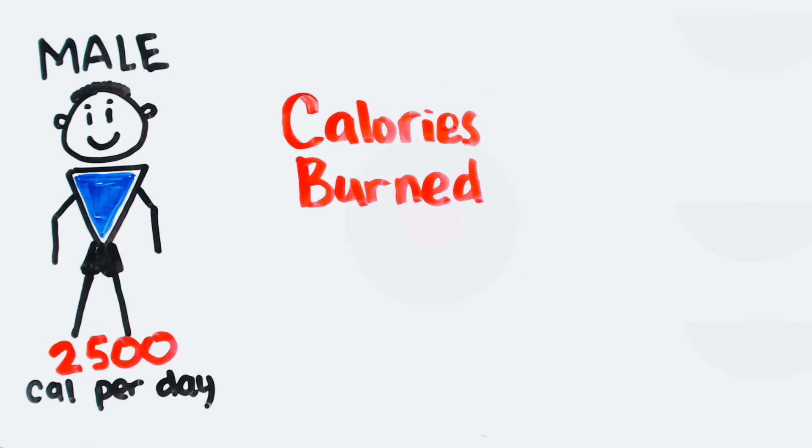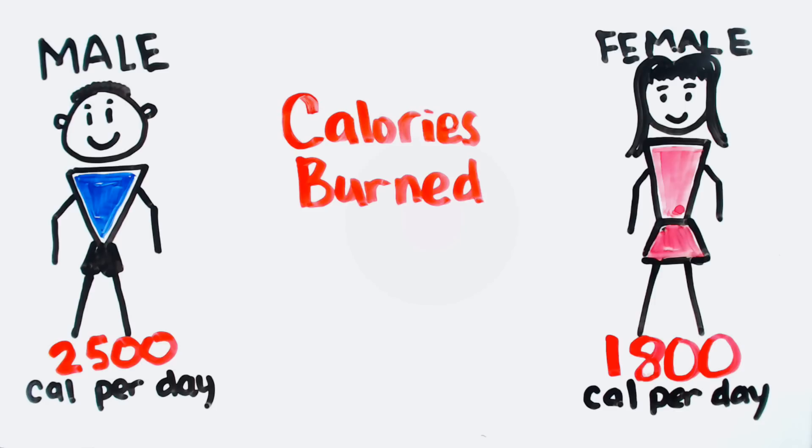On average, an adult male burns about 2500 calories per day. An adult female burns about 1800 calories per day. Any diet that restricts the amount of calories under these averages will typically see weight loss results.